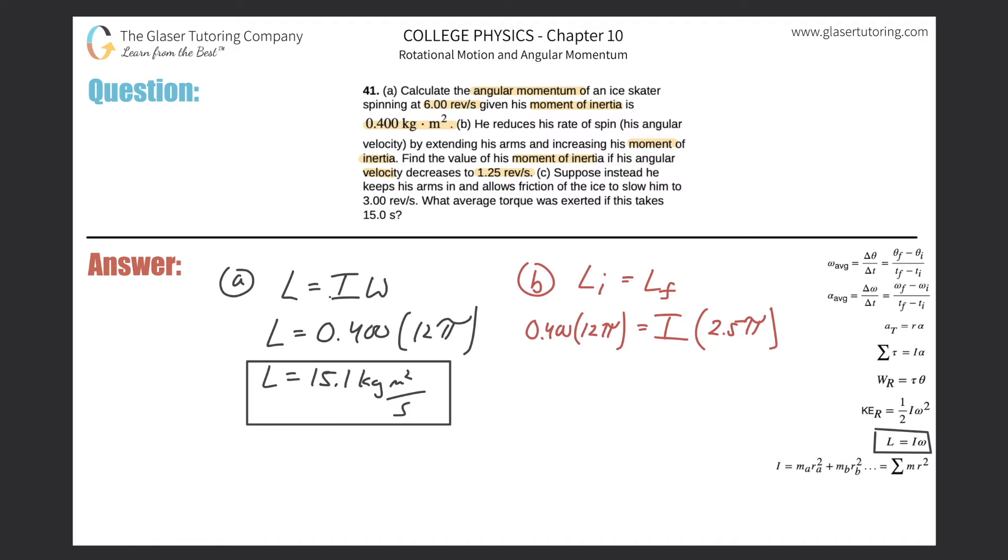And then just simply divide out now the 2.5π from both sides to find the new moment of inertia. And the π is canceled. You can reduce, blah, blah, blah. So just take that answer, divide it by 2.5. And we get a value of about 1.92 kilogram meter squared.